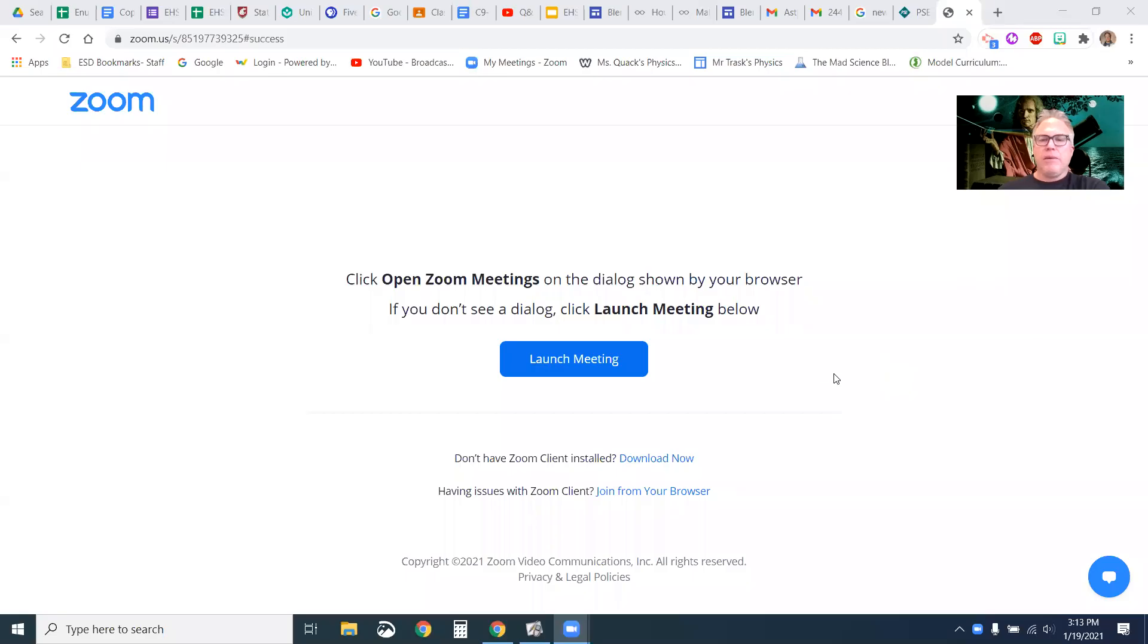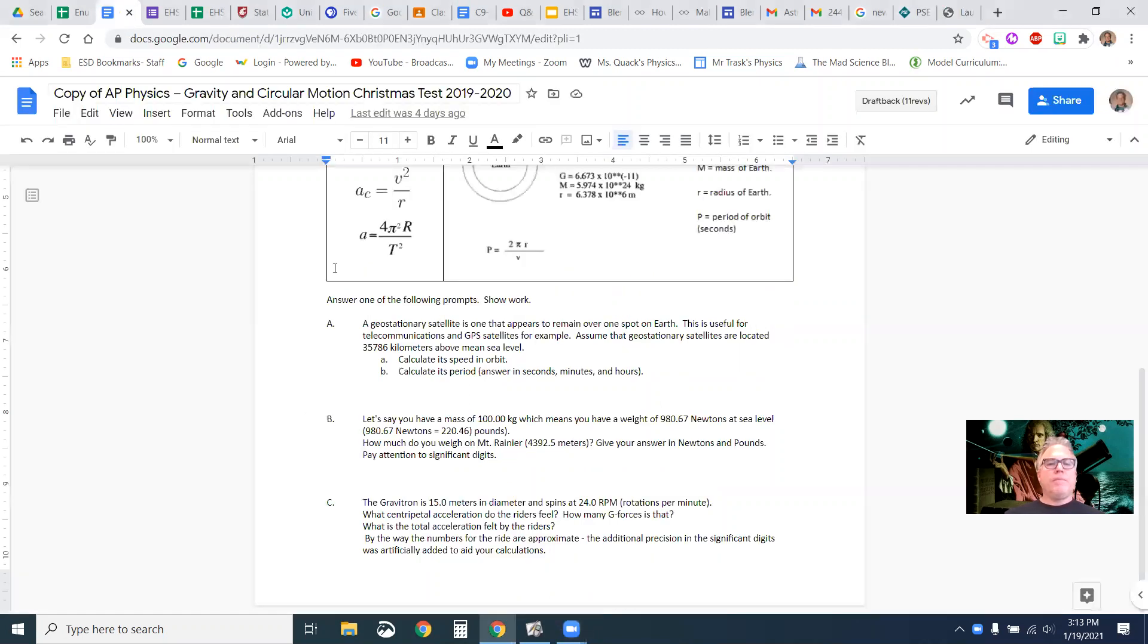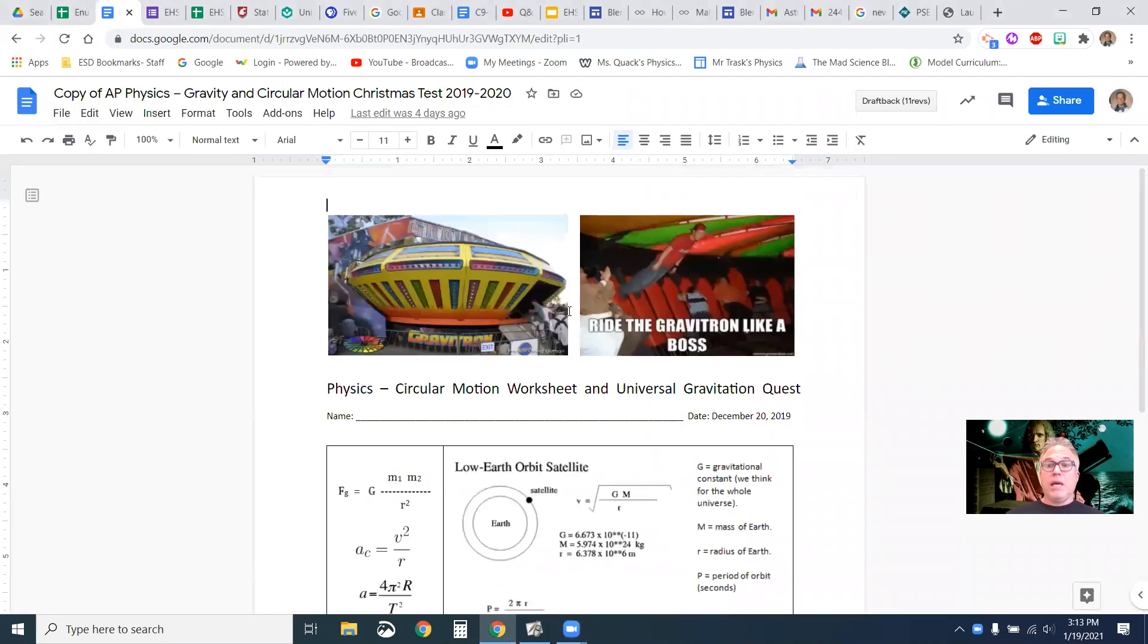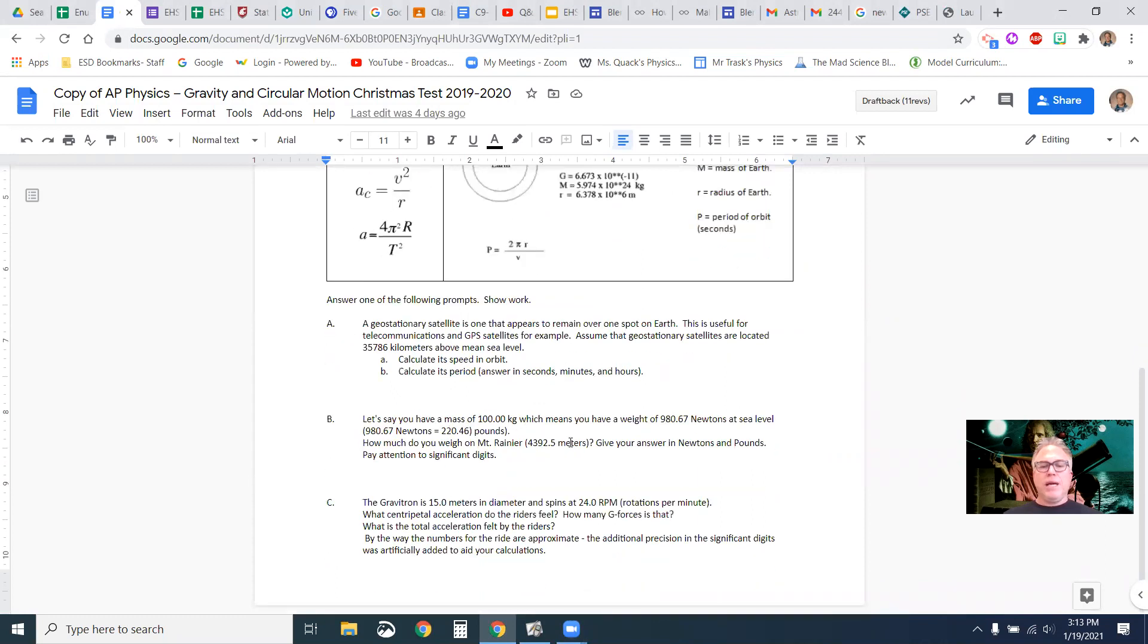Hey AP scientists, Mr. Basting here. Hey, last week we had a quiz on centripetal motion and I said I was going to make videos and show you how to do them. And I showed you the first one and it took 24 minutes. Holy smokes, let's see if I can beat that time. So it was this quiz here and the second one had to do with how much you weigh if you're on Mount Rainier.